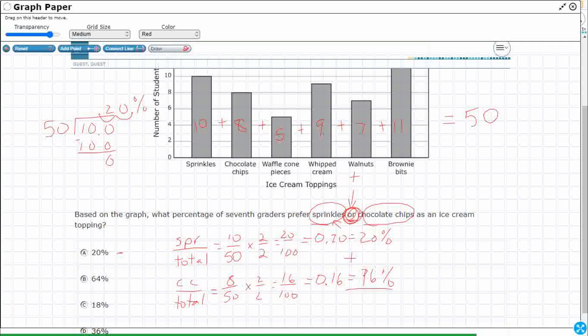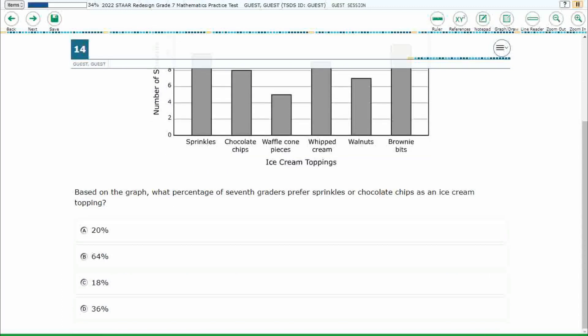So I've got 20 percent for sprinkles, 16 percent for chocolate chips. 'Or' means add them up and there we go. I've got a total percentage of 36 percent if I add those two options together. It's down at my very very bottom. The answer is D.